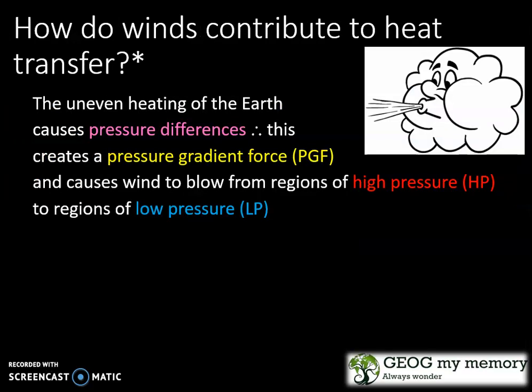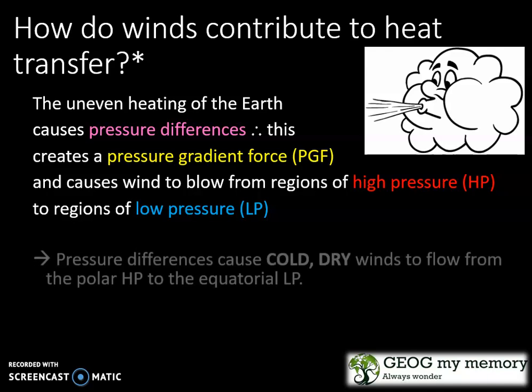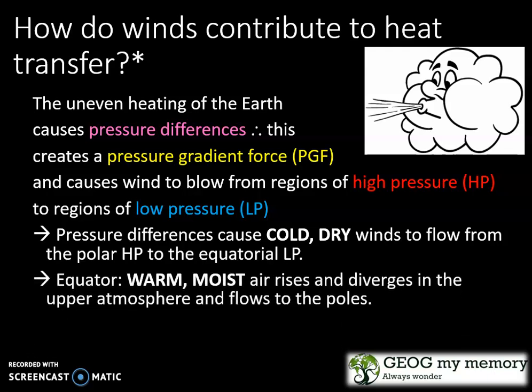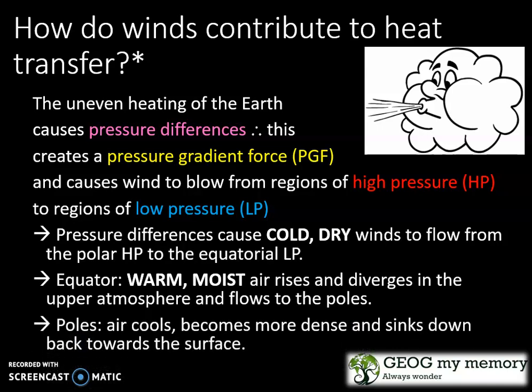But how do winds contribute to heat transfer? The uneven heating of the Earth causes pressure differences. Therefore, this creates a pressure gradient force and causes wind to blow from regions of high pressure to regions of low pressure. The pressure differences cause cold, dry winds to flow from the polar high pressure to the equatorial low pressure. The equator has warm, moist air that rises and diverges in the upper atmosphere and flows to the poles. The poles have air that cools, becomes more dense and sinks down back towards the surface. Remembering this process can be strenuous, so let's look at the following diagram.